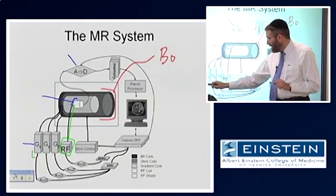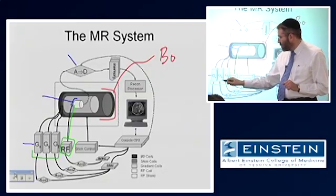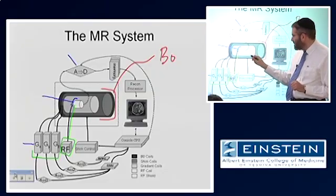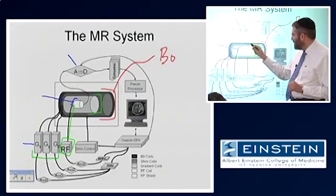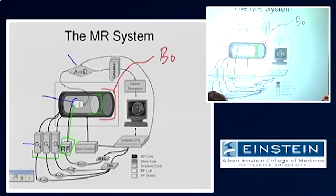There is the gradient system, which is these gradient amplifiers, and then the gradient coils that are inside the bore of the magnet.